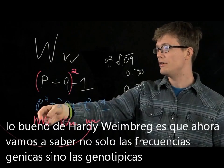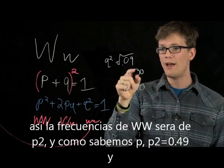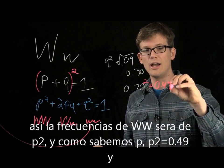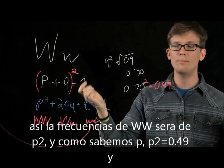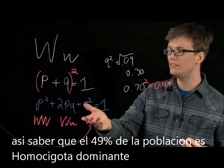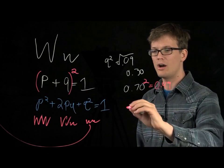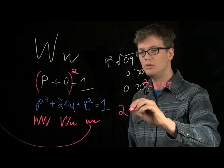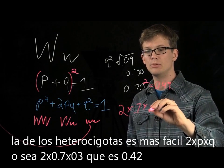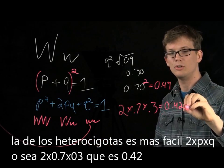So the frequency of the WW homozygous dominant is p squared. We have p as 0.70, so we just have to square this, and that equals 0.49 — meaning 49% of the population is homozygous dominant. And now the math gets even easier because we know p and q. So to figure out how many heterozygotes there are, we just do 2 times p (0.7) times q (0.3), and that equals 0.42.